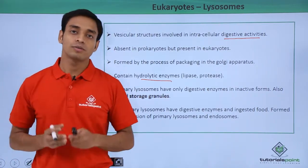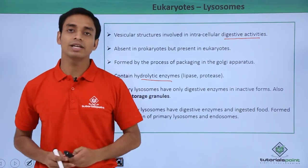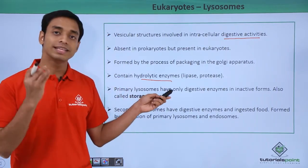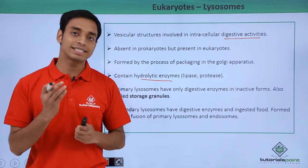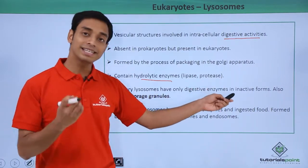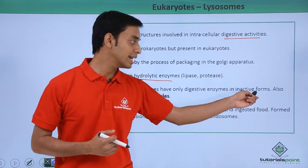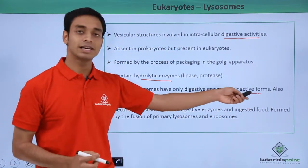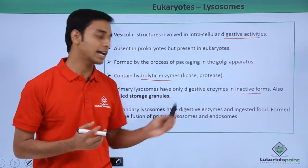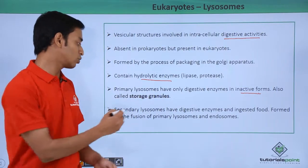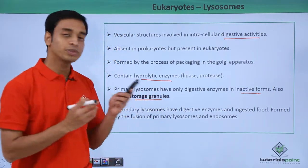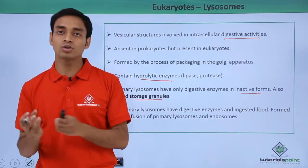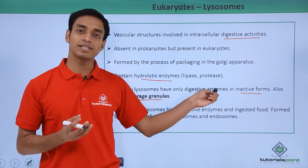Lysosomes can be of two forms: primary lysosomes and secondary lysosomes. Primary lysosomes contain digestive enzymes, but these digestive enzymes are present in the inactive form. They are also known as storage granules because they store these digestive enzymes in an inactive form.